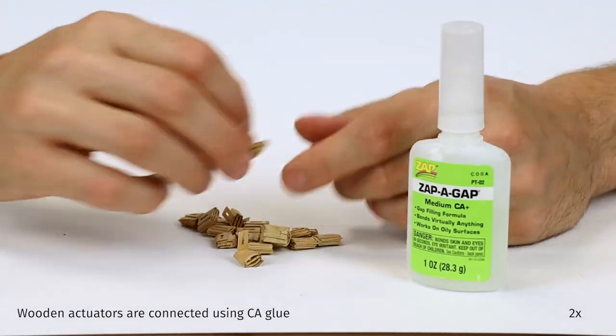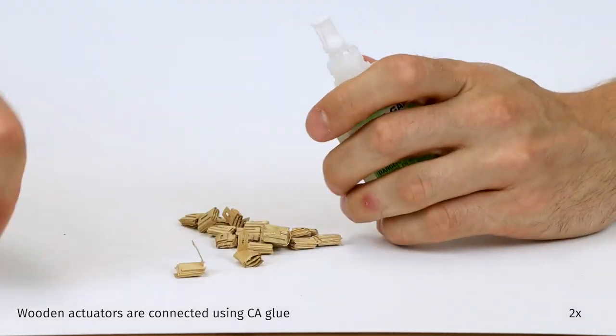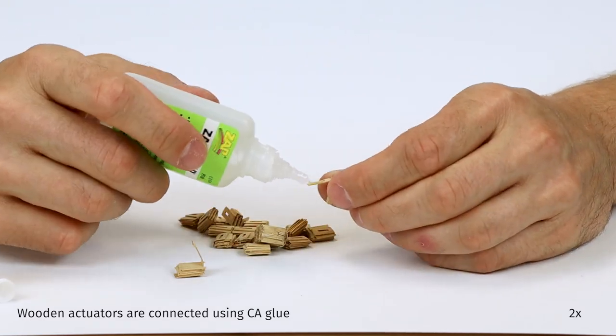Once a design has been confirmed, the wooden actuators are assembled in a similar process, using CA glue instead of glue sticks.